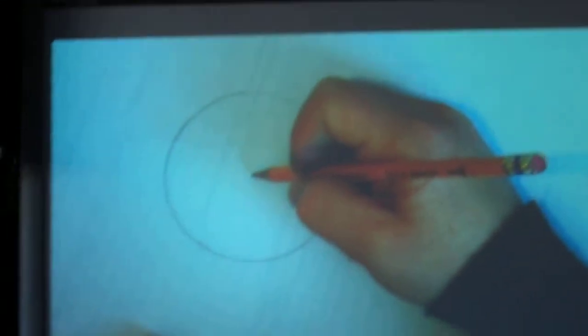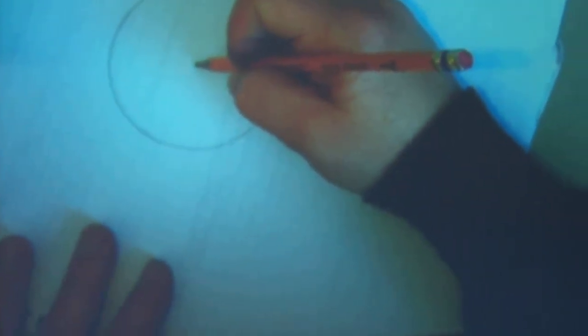Alright, so the next thing I'm going to do once I have my circle made is I'm going to put a little dot where the point was, the little hole. Because that's my reference point. I need that. So once I have that hole made...